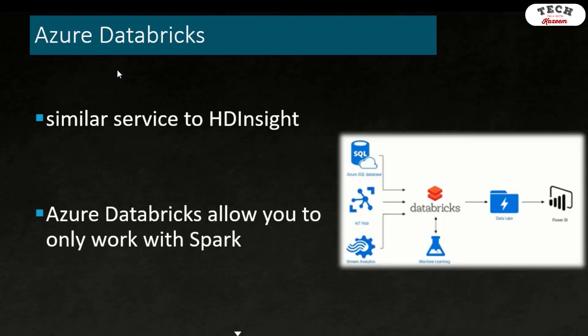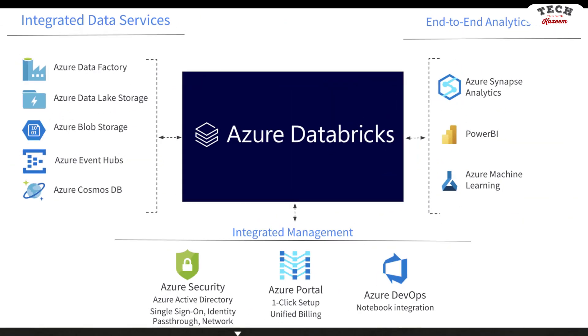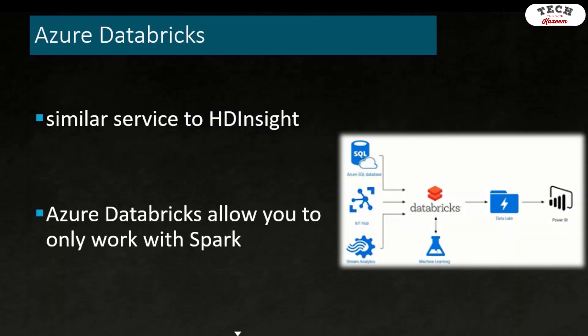The last one is Azure Databricks. Azure Databricks is very similar to HD Insight, although it is a more recent service. However, unlike HD Insight where you can choose from multiple cluster technologies — such as Interactive Query, HBase, Hadoop, and Storm — Azure Databricks only allows you to work with Apache Spark. That's the major difference between Azure Databricks and HD Insight.